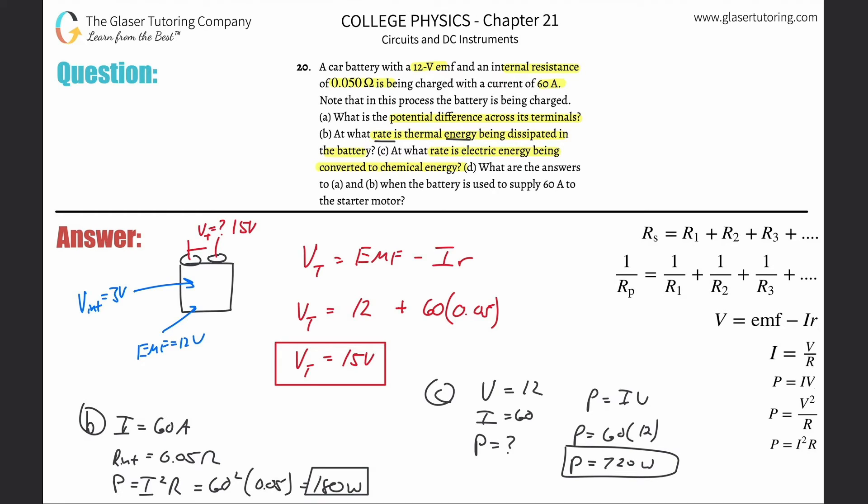Letter D. What are the answers to A and B when the battery is used to supply 60 amps to the starter motor? So what the heck was A? What is the potential difference across its terminals? So now it's the exact opposite. So basically, like I was mentioning before, all you're going to do is you're going to take this equation.